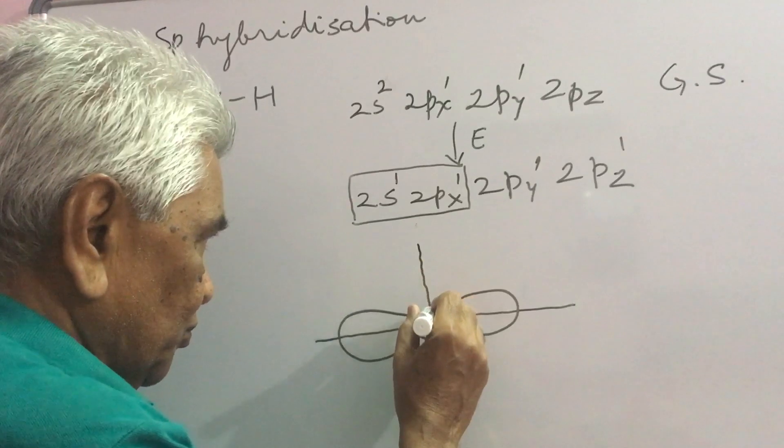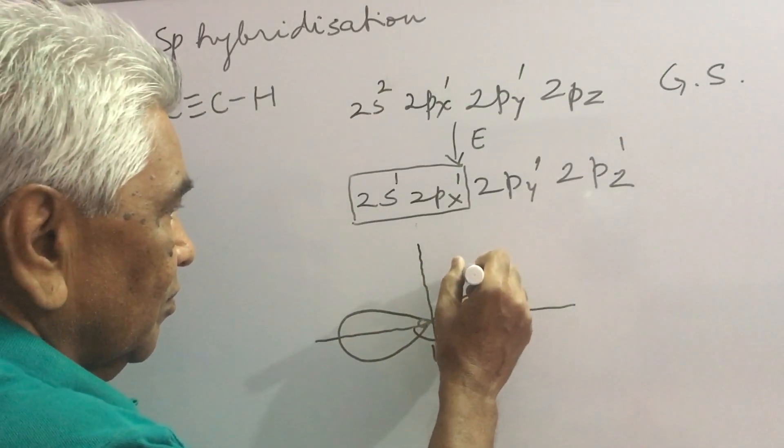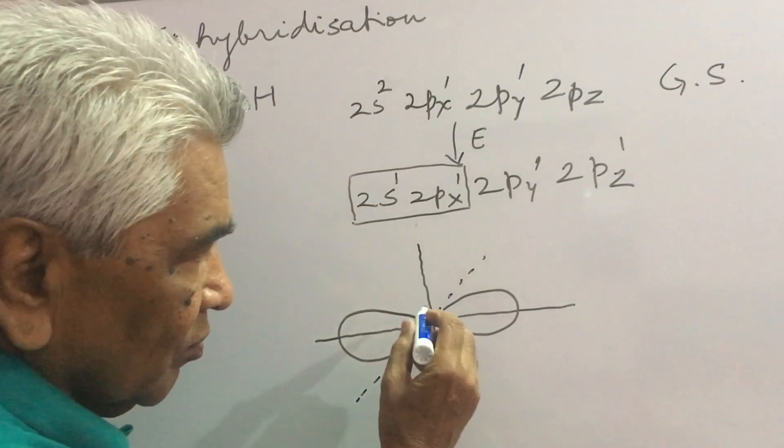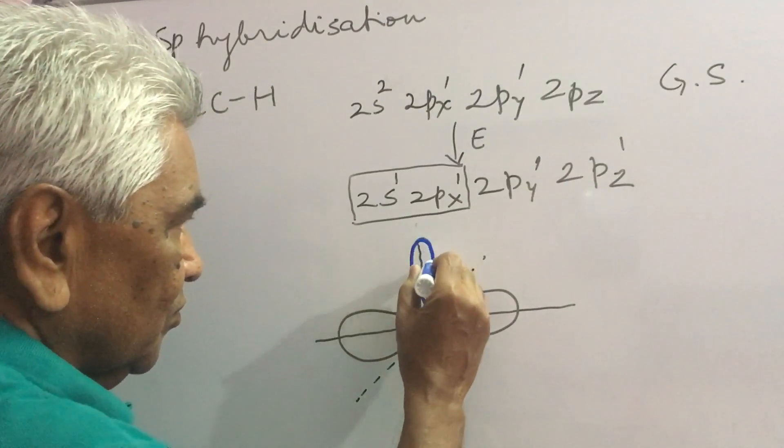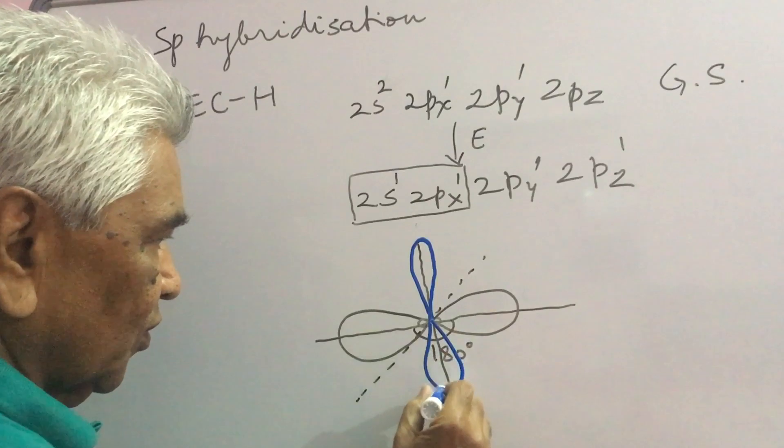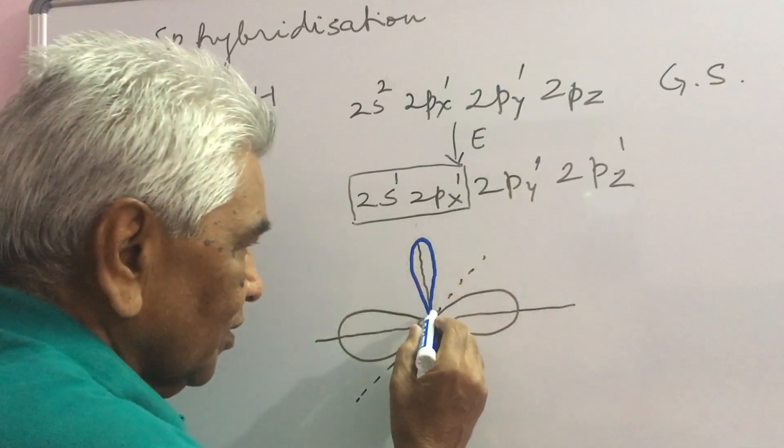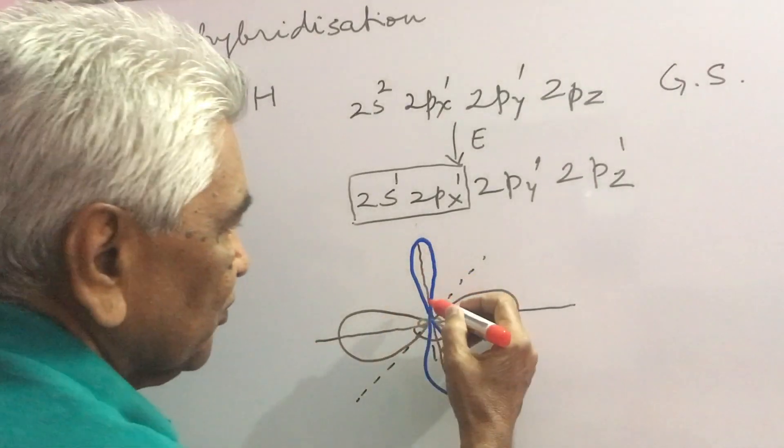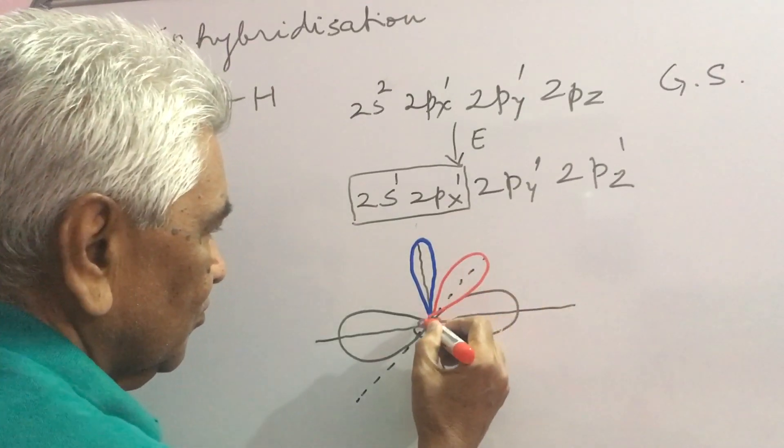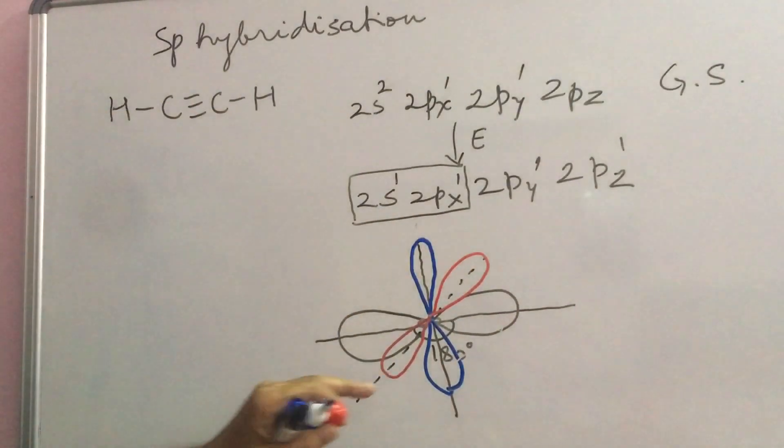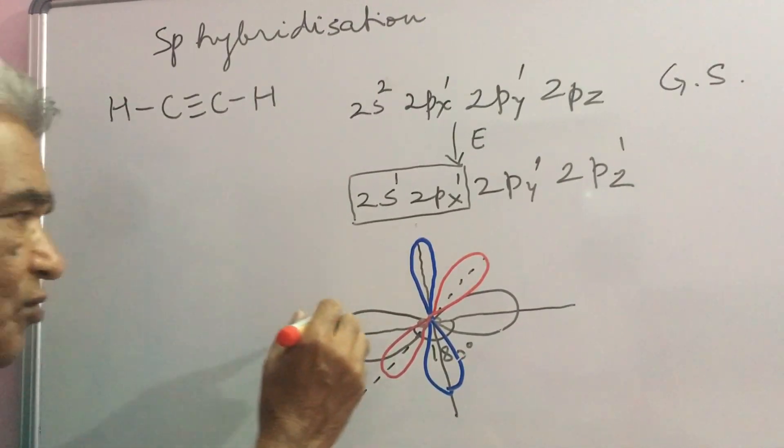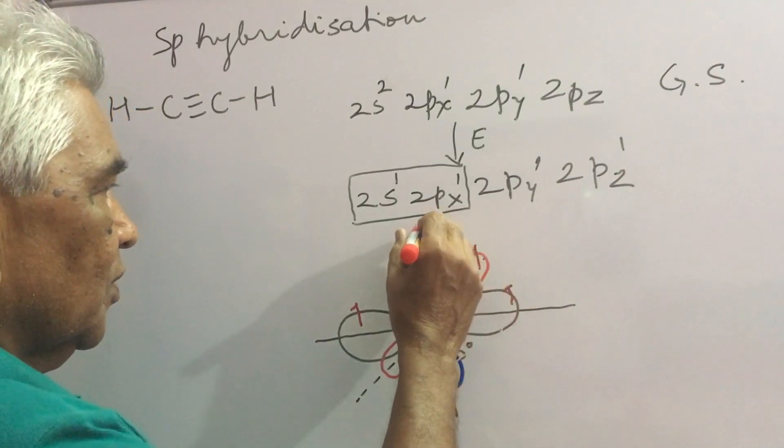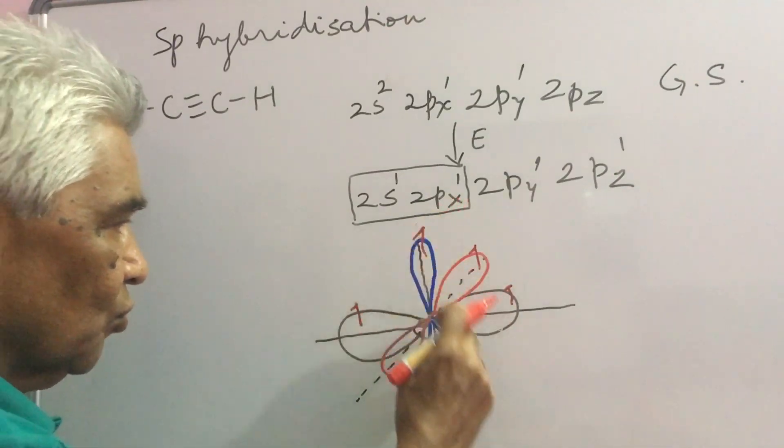This is the unused P. This is one, say 2Py and the other 2Pz. All these have one electron each. One in this, one in this and here. This whole is P, this whole is P.